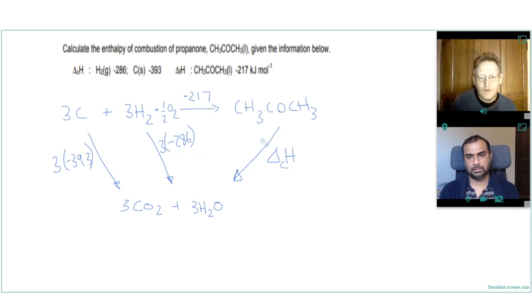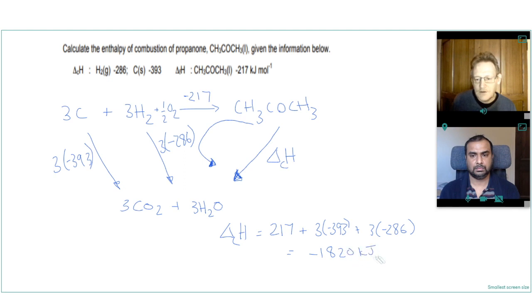And then if we look, going from the bottom to the top of this arrow would be going that way. So we'd be going against the minus 217 and with the 3 times minus 293 and 3 times minus 286. So our enthalpy of combustion would equal plus 217 and then 3 minus 393 add 3 minus 286 and that would give us exactly the same answer as minus 1820 kJ per mole.